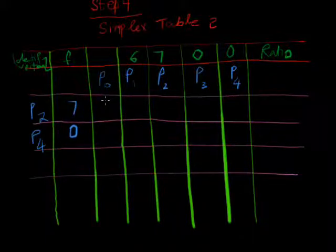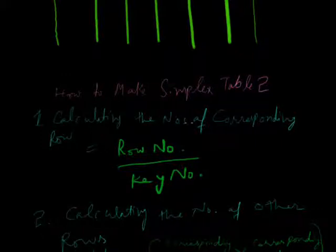Now, for calculating this, this, this, this, this, and this, we have a formula, calculating a number of corresponding row. Row number, divide key numbers.